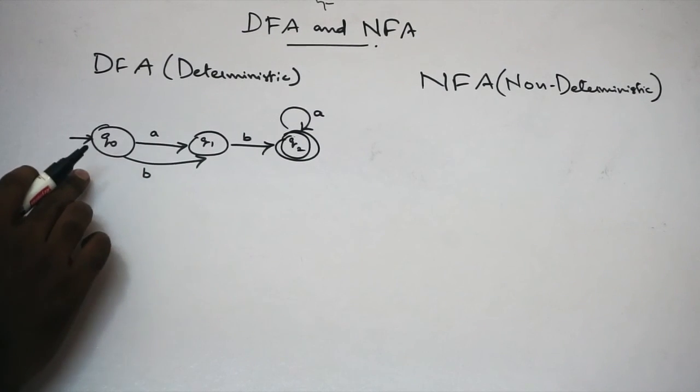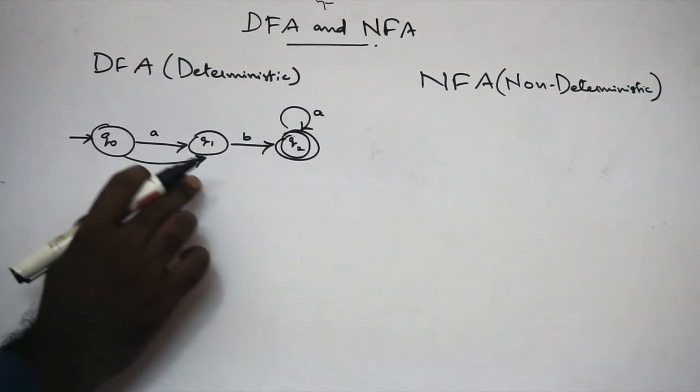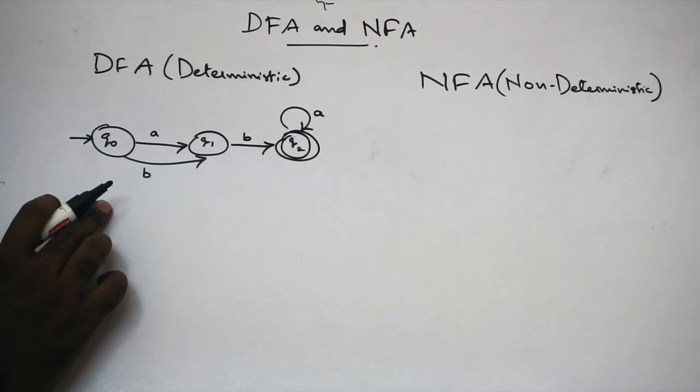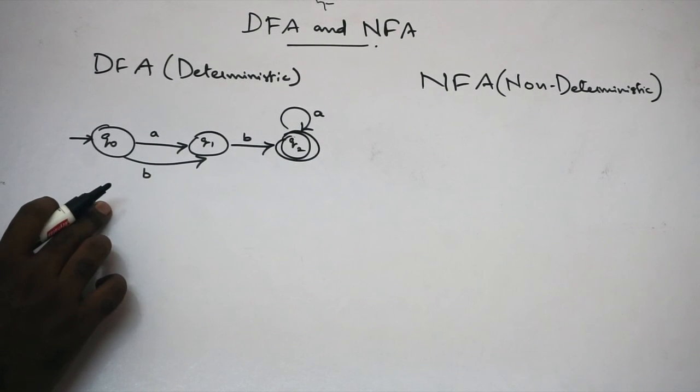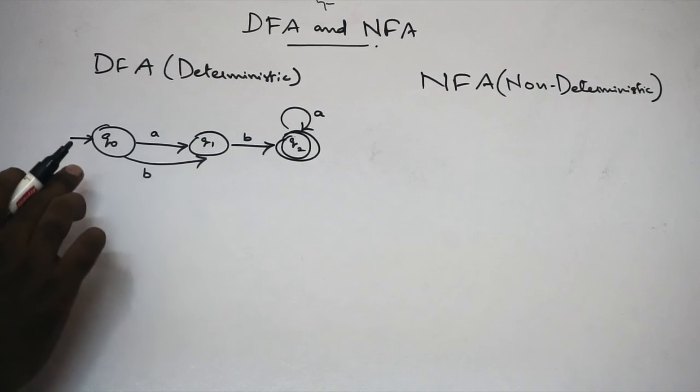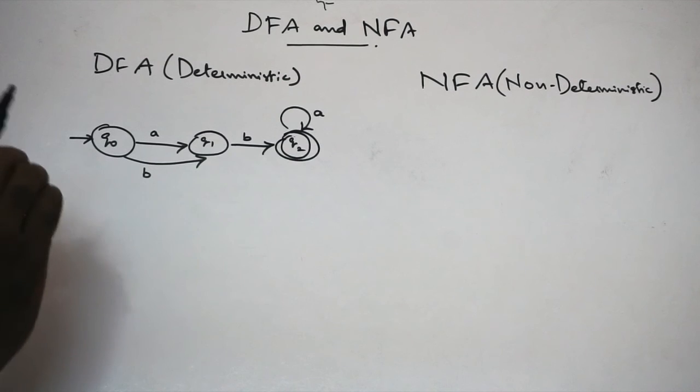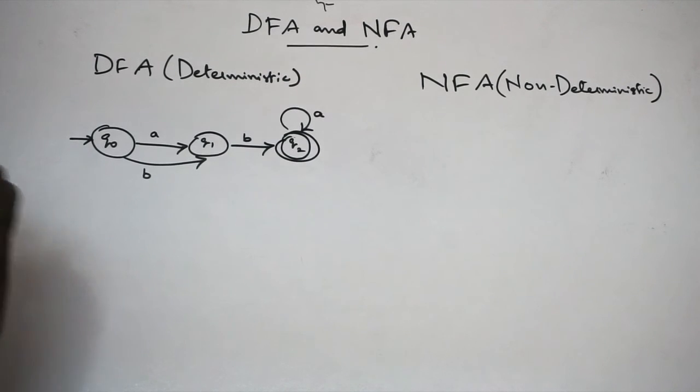Let's look at this diagram. In this machine, we will say Deterministic. We will define the previous machine. Deterministic is the first thing; determined is the next thing.